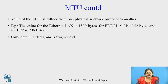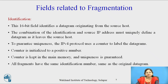Only the data in the datagram is fragmented, whereas other fields like source address, destination address, and checksum are not fragmented. Fragmentation has three fields: identification, flags, and fragmentation offset.